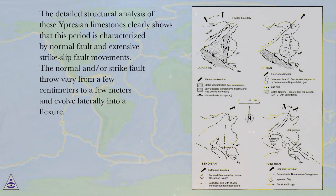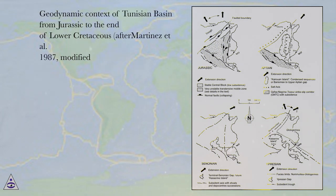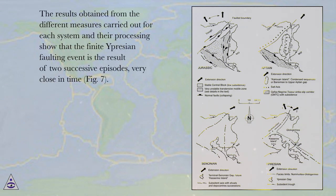The detailed structural analysis of these Uprisian limestones clearly shows that this period is characterized by normal fault and extensive strike-slip fault movements. The normal and/or strike-slip fault throw vary from a few centimeters to a few meters and evolve laterally into a flexure. Figure 7: Geodynamic Context of Tunisian Basin from Jurassic to the end of Lower Cretaceous, after Martinez et al., 1987, modified.